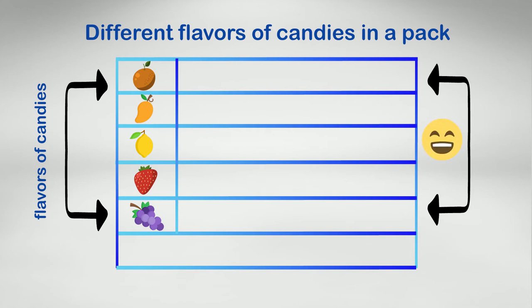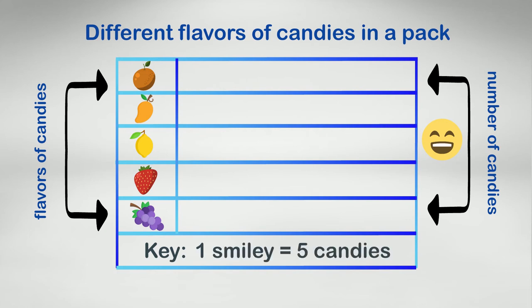The last row has the key. The key tells us what each picture or symbol represents. Here the key says that one smiley is equal to five candies, that is each smiley represents five candies. We can either use skip counting method or multiplication to count the number of candies through the smileys.